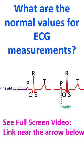The P wave is due to the electrical activity of the upper chambers, known as atrial depolarization. A normal P wave in an adult has 2.5 mm as the upper limit for both width and height in a standard ECG recording at 25 mm per second paper speed. Width is increased in enlargement of the left atrium, and height is increased in enlargement of the right atrium. If both are increased, both atria are enlarged.